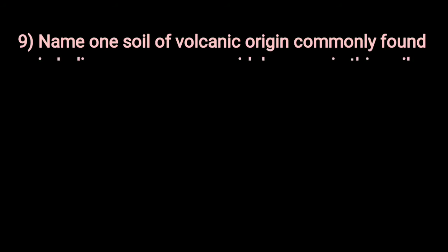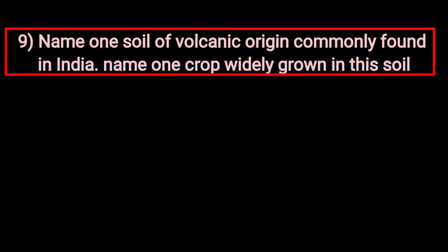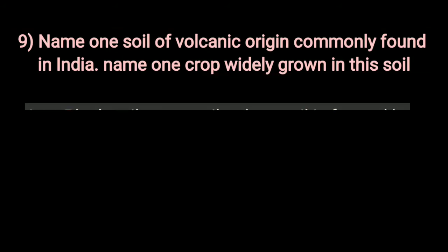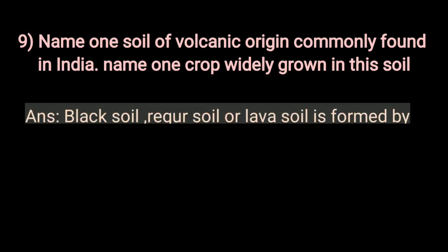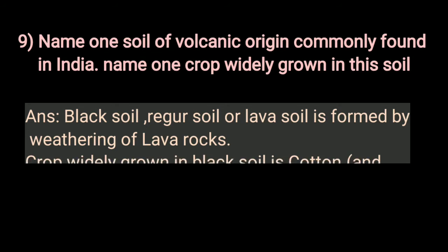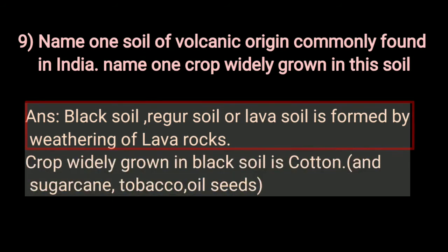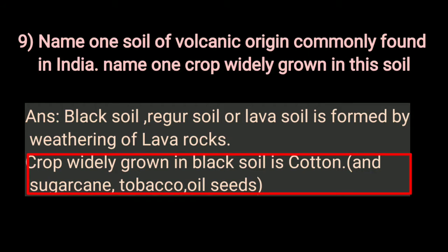Name one soil of volcanic origin commonly found in India and one crop widely grown in it. Black soil, also called regur soil or lava soil, is formed by weathering of lava rocks. The crop widely grown in black soil is cotton; other crops include sugarcane, tobacco, and oilseeds.